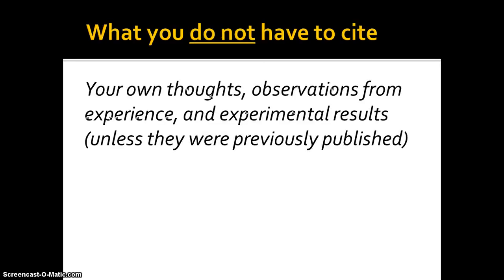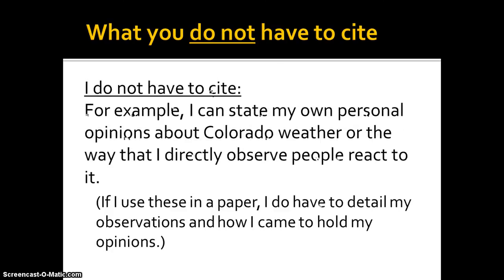What you don't have to cite: your own thoughts, your observations from your own personal experience, and experimental results that you yourself have done, unless they were previously published. For example, I don't have to cite my own personal opinions about Colorado weather or the way that I directly observe people reacting to it. If I use these in a paper, I do still have to detail my observations and how I came to hold my opinions, but I don't have to cite myself.